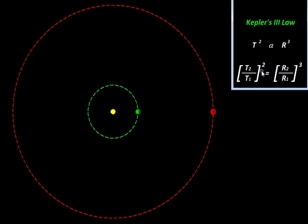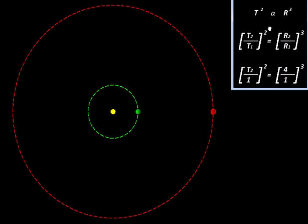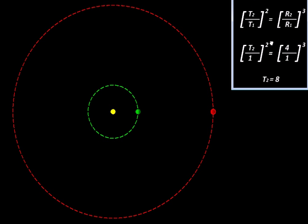This will be equal to the ratio of their radii, R2 upon R1 cubed. Let us substitute the values: R2 upon R1 is four upon one, while the period of Earth's orbit I have taken as one year. That gives us T2, the orbital period of the planet, as eight years.